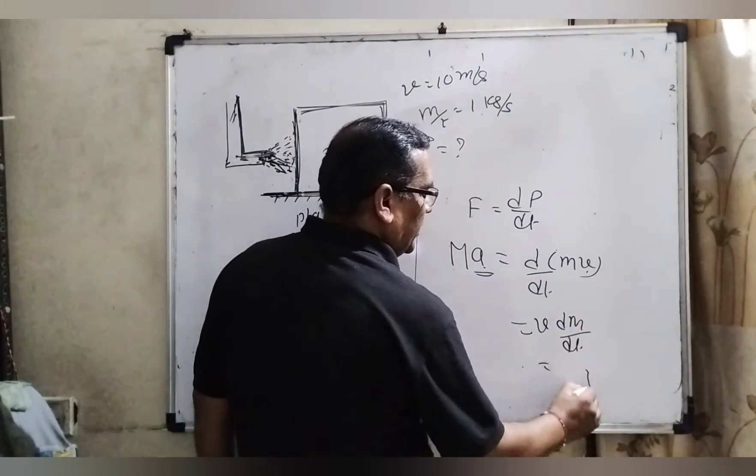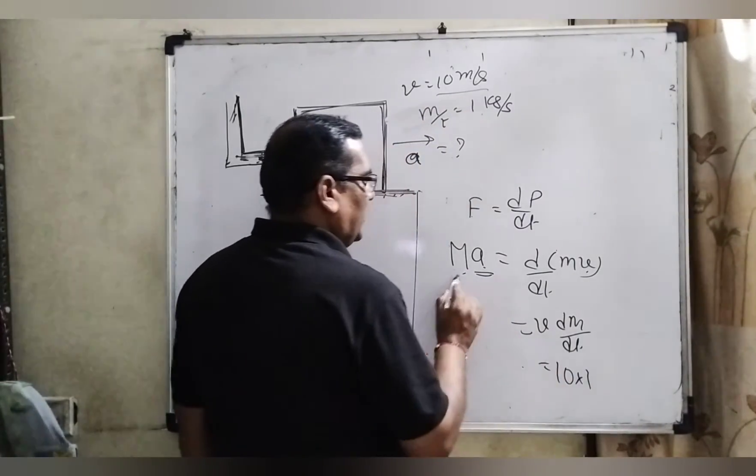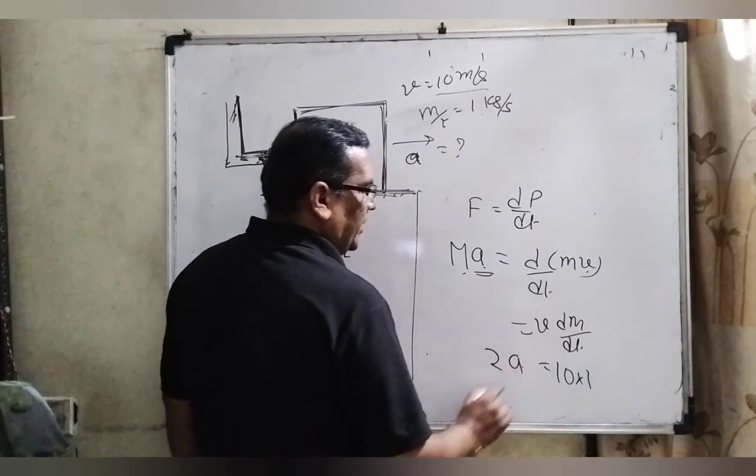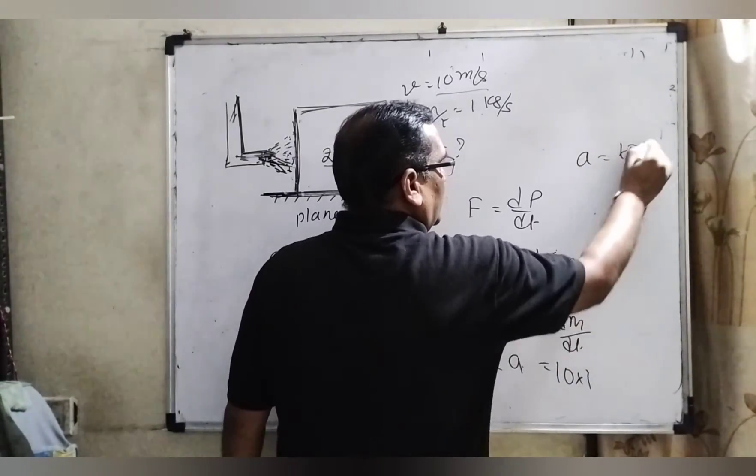So substitute this value: 1 kilogram, and velocity is already given as 10 meters per second, and mass of the block is 2. We have to find out acceleration. Then A can be written as 10 by 2—2 fives are 10—